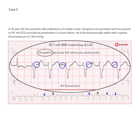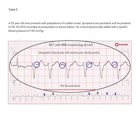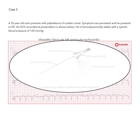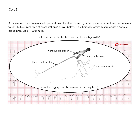The term idiopathic ventricular tachycardia describes a defined group of ventricular tachycardias occurring in a structurally normal heart. This particular variety of idiopathic ventricular tachycardia is generated by a re-entrant loop formed in the interventricular septum between myocardium and elements of the conducting system.